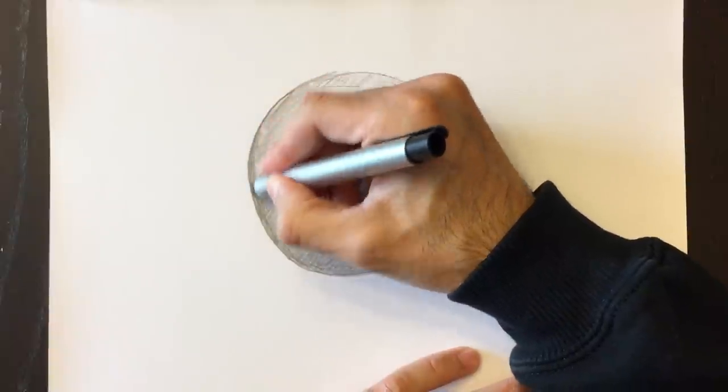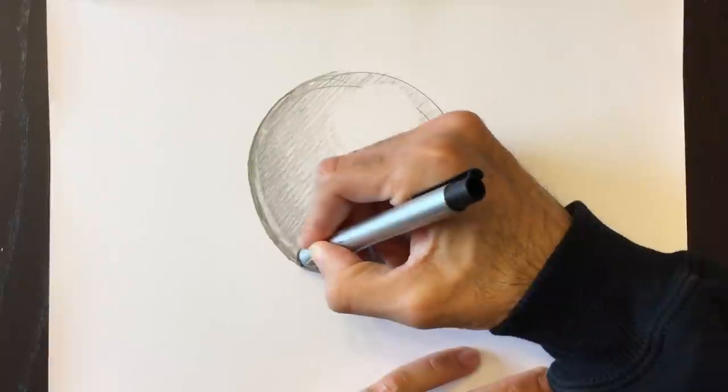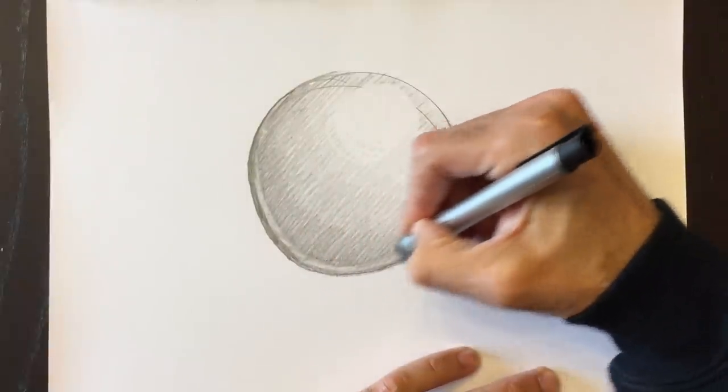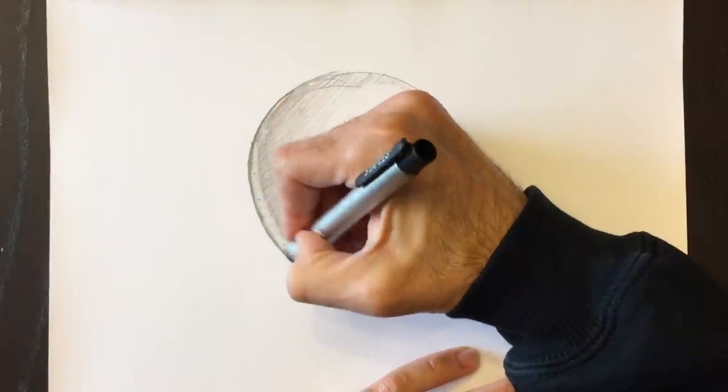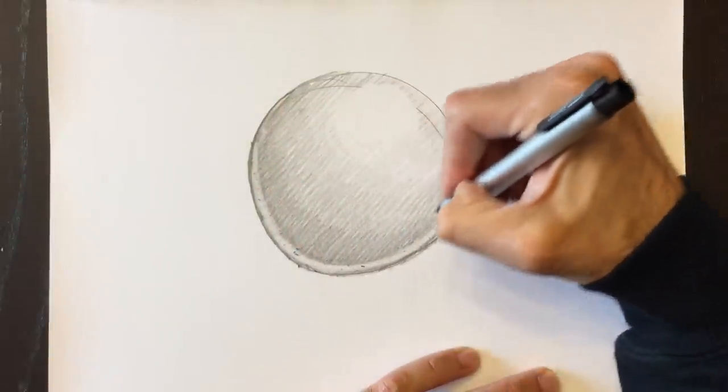Sometimes, when a sphere is on the surface, the light reflects off that surface and bounces up and hits the sphere at the bottom of it. So we can actually create that element by erasing a little sliver along the bottom edge of our sphere, which gives it an idea that there's a reflection at the bottom of this object. There we go.